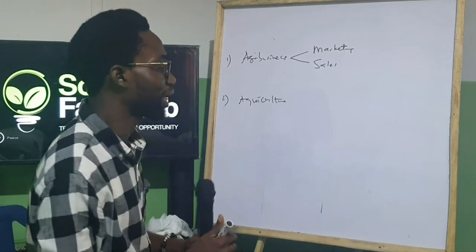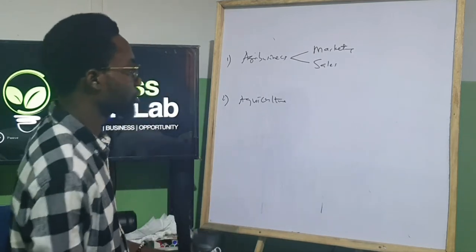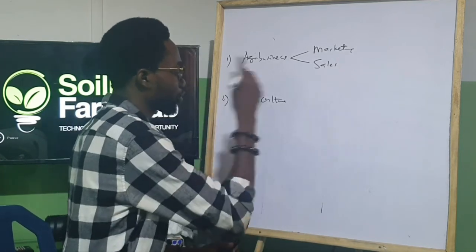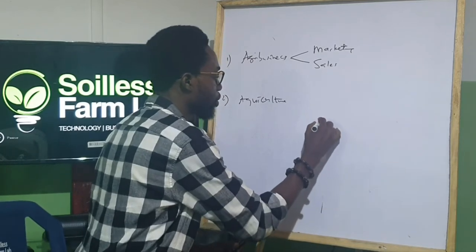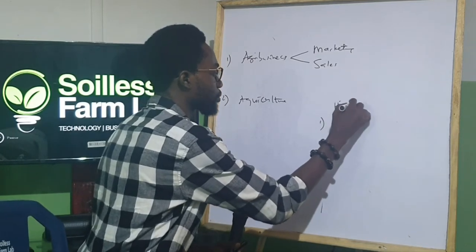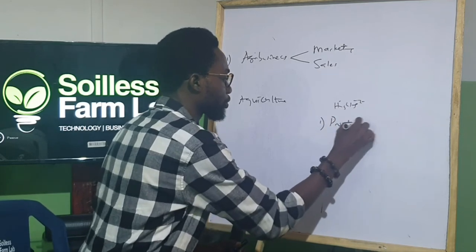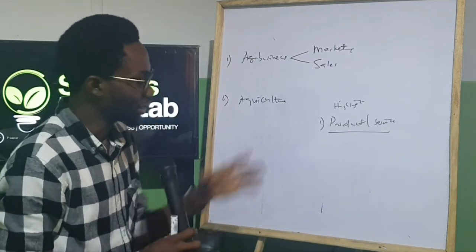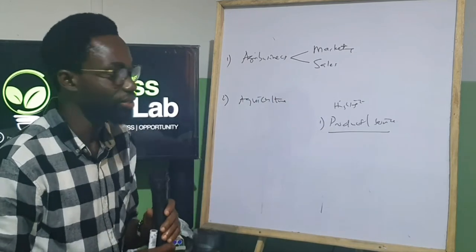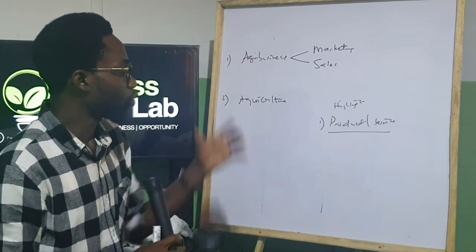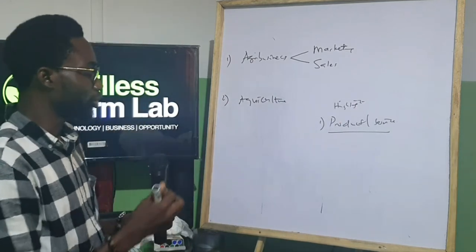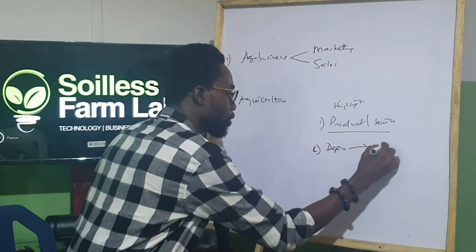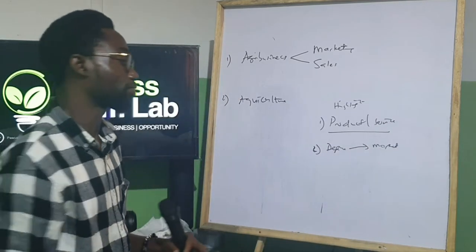As an assignment, before we start the module for this month, I would want us to do something simple for the next couple of weeks. One, give a highlight of a product or service you intend to sell. Look at what you do — a product or service you want to sell. Number two, define your market. You should have done that using customer profiling.